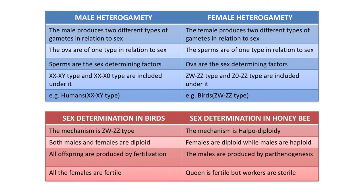Differences between sex determination in birds and honeybees: In birds, the mechanism is ZW/ZZ; in honeybees it is haplodiploid or arrhenotoky. In birds, both males and females are diploid; in honeybees, females are diploid while males are haploid. In birds, all offspring are produced by fertilization; in honeybees, males are produced from unfertilized eggs by parthenogenesis. In birds, all females are fertile; in honeybees, the queen is fertile but workers are sterile.